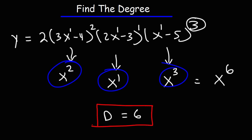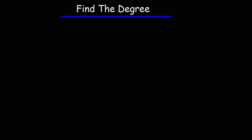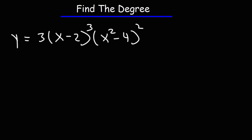And that's how you can find the answer when the polynomial is given in factored form. Let's try another example: y equals 3 times (x minus 2) raised to the third power, times (x squared minus 4) raised to the second power, times (x cubed minus 5) raised to the fourth power. Go ahead and find the degree of this polynomial.